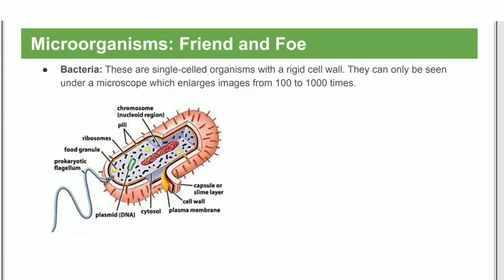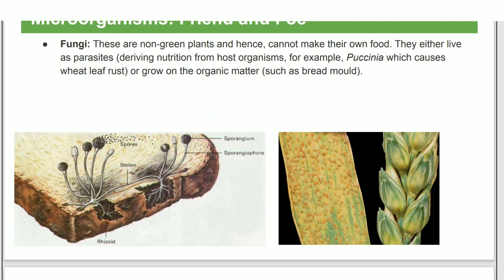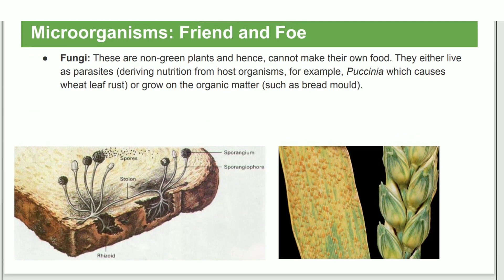Spirogyra is an example of algae. Bacteria are single-celled, microscopic organisms. Fungi are non-green plants that have to feed as parasites.